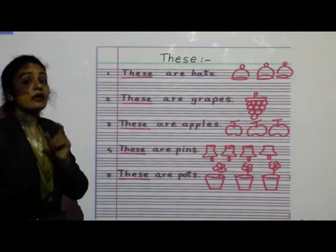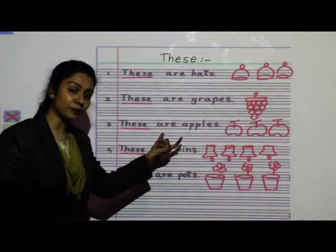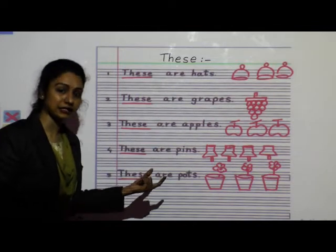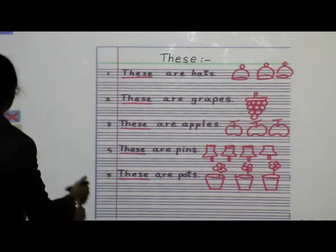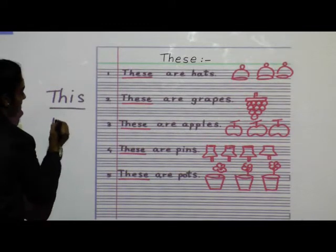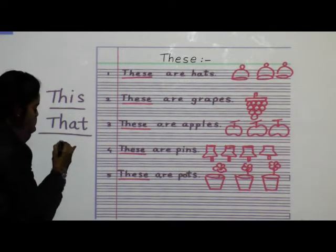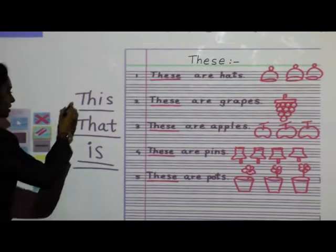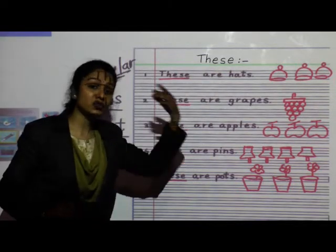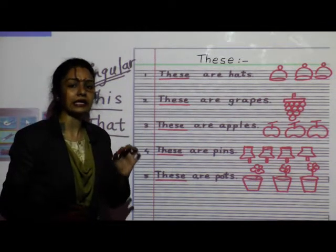When we use plural form, we must use A-R-E. Before this, when we used 'this' and 'that,' we used 'is' as the helping verb because those are in singular form. But 'these' and 'those' are in plural form, so whenever we use 'these' and 'those,' we should use 'are' as the helping verb.